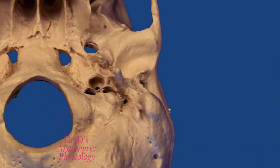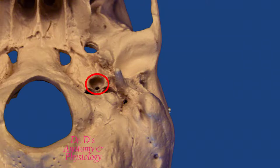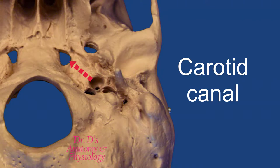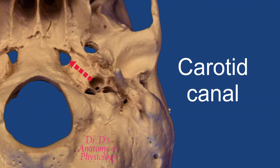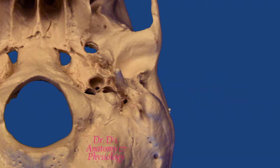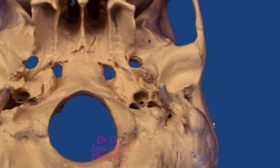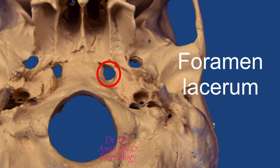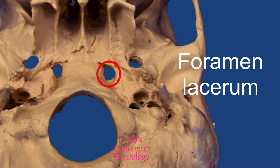Slightly medial to the jugular fossa, you're going to find the opening to the carotid canal. The carotid canal is an important feature because it allows for the passage of the internal carotid artery to the brain — an important artery that supplies blood to the brain. Anterior and medial to the carotid canal, you'll see an opening referred to as the foramen lacerum, which translates to jagged opening — you can think of laceration, which is a jagged cut.